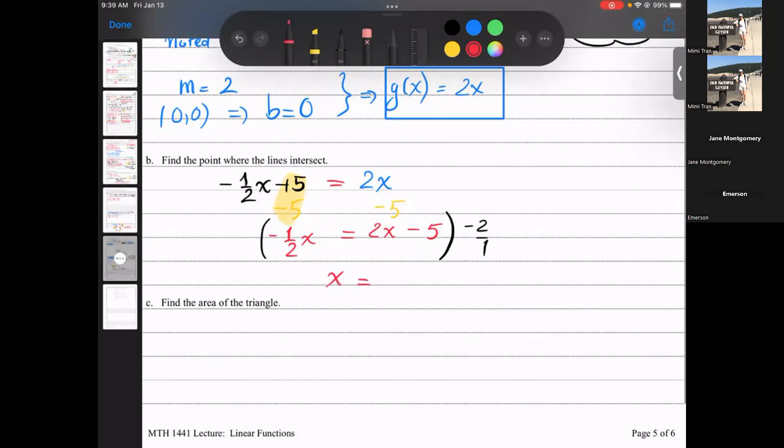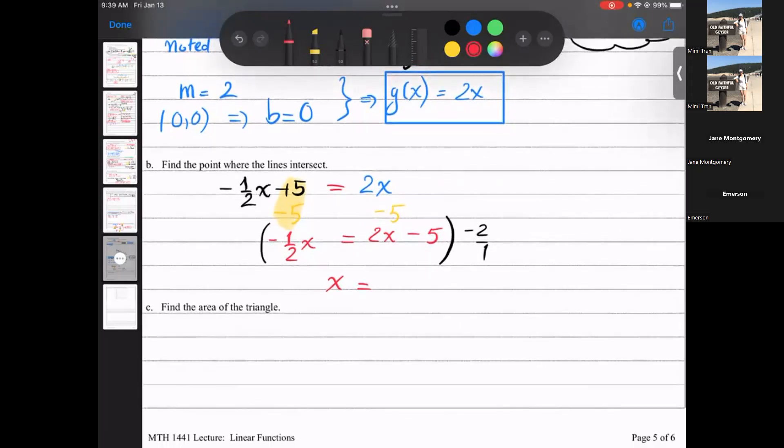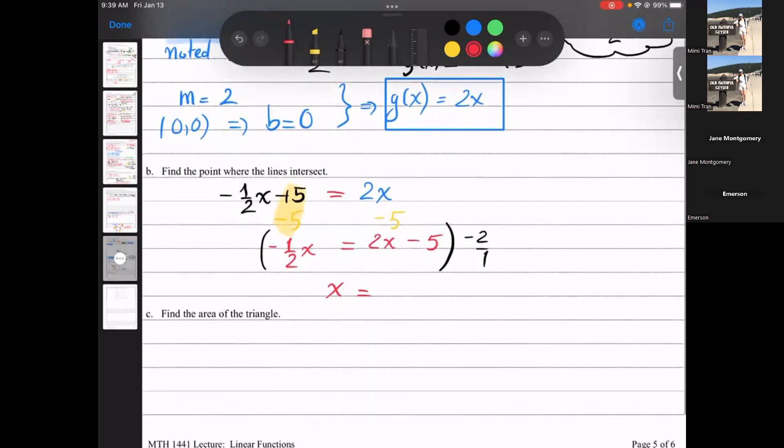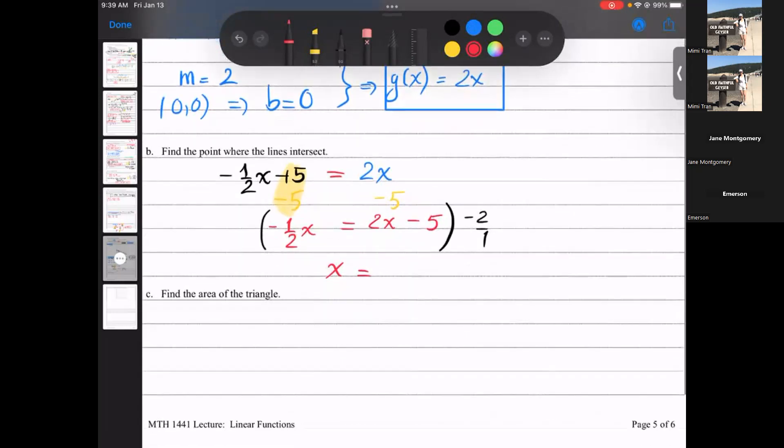So you distribute that negative two over one to everyone. On the left hand side, that's just x. On the right hand side was negative two times 2x. Hang on, something. Oh, I, yeah, that's fine. Yeah, it's fine. It's fine like that. Negative 4x, and then negative two times negative five is plus 10. I didn't have to do that step, but that's all right.